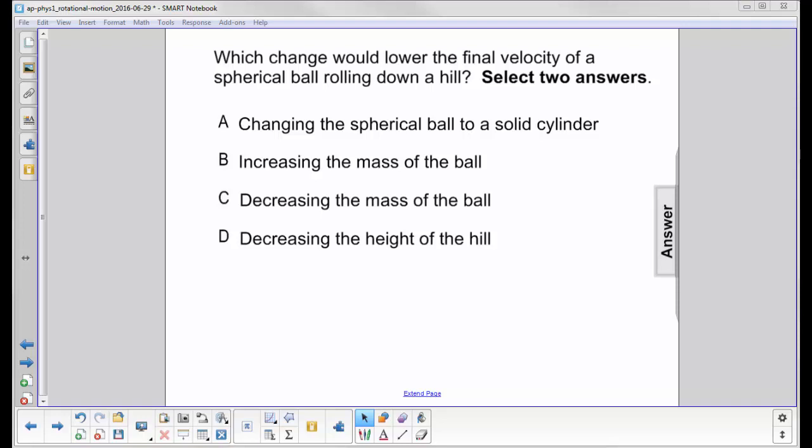Which change would lower the final velocity of a spherical ball rolling down a hill? Select two answers. The first one is kind of fanciful, changing the spherical ball to a solid cylinder. Somehow we're going to do that.